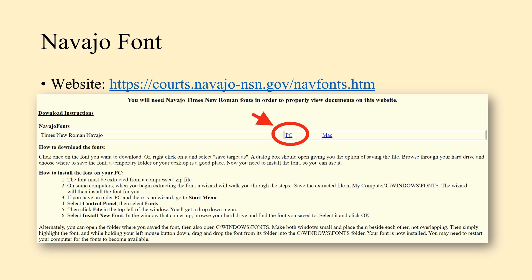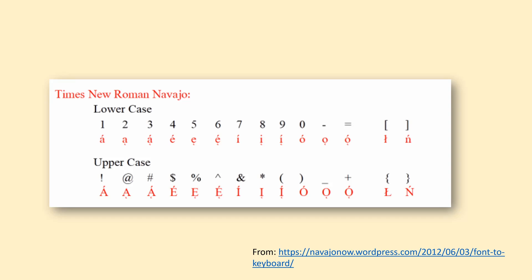Once you have the font, just put it in your font folder and you should be able to access it through Microsoft Word or PowerPoint, where it will show up as Times New Roman Navajo. Installation instructions are on the website. One interesting thing is that every number on your keyboard is associated with a letter and its diacritic — very specific outputs per number. This also extends to the hyphen, equal sign, brackets, and curly brackets. You can get uppercase by pressing Shift.